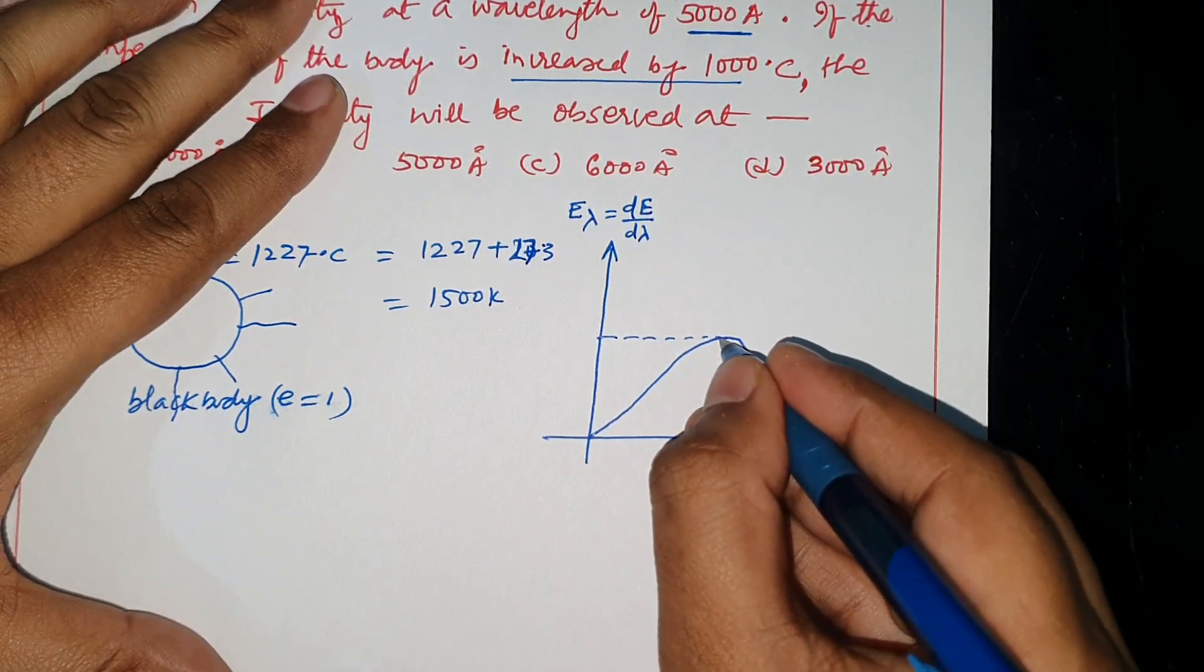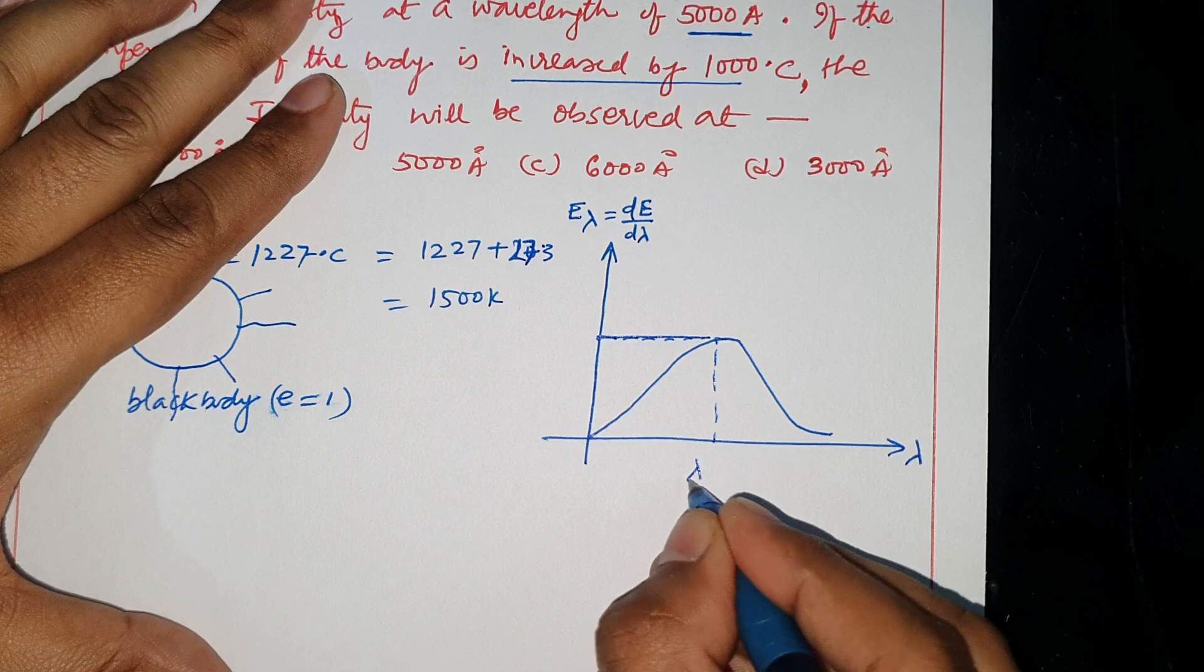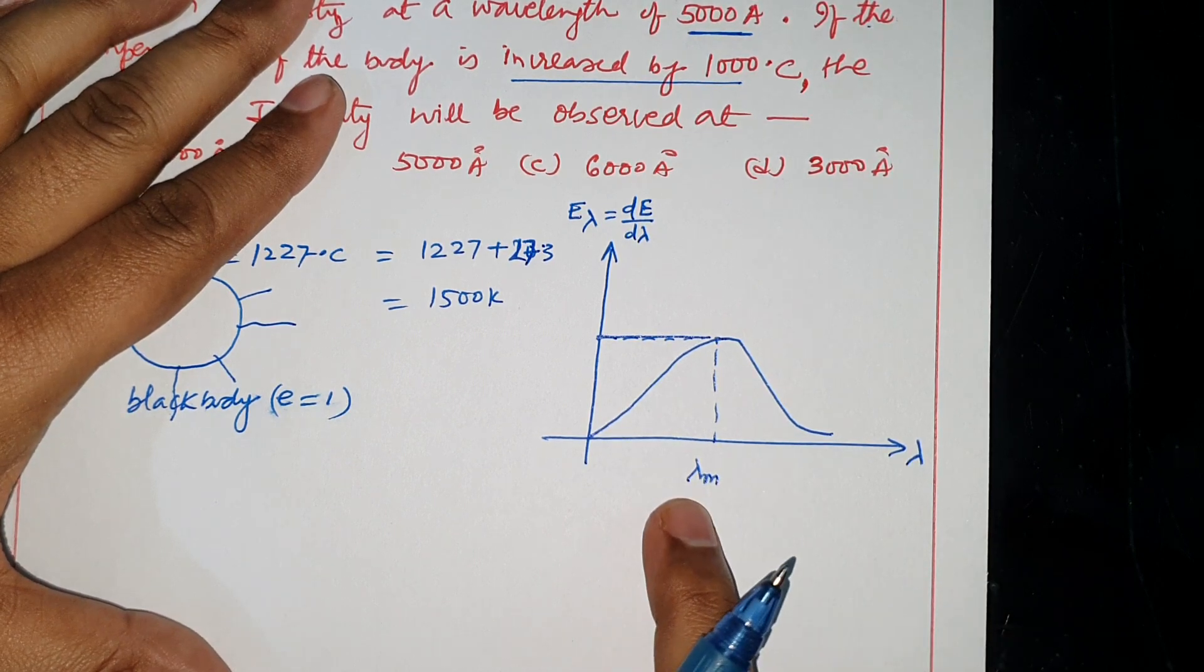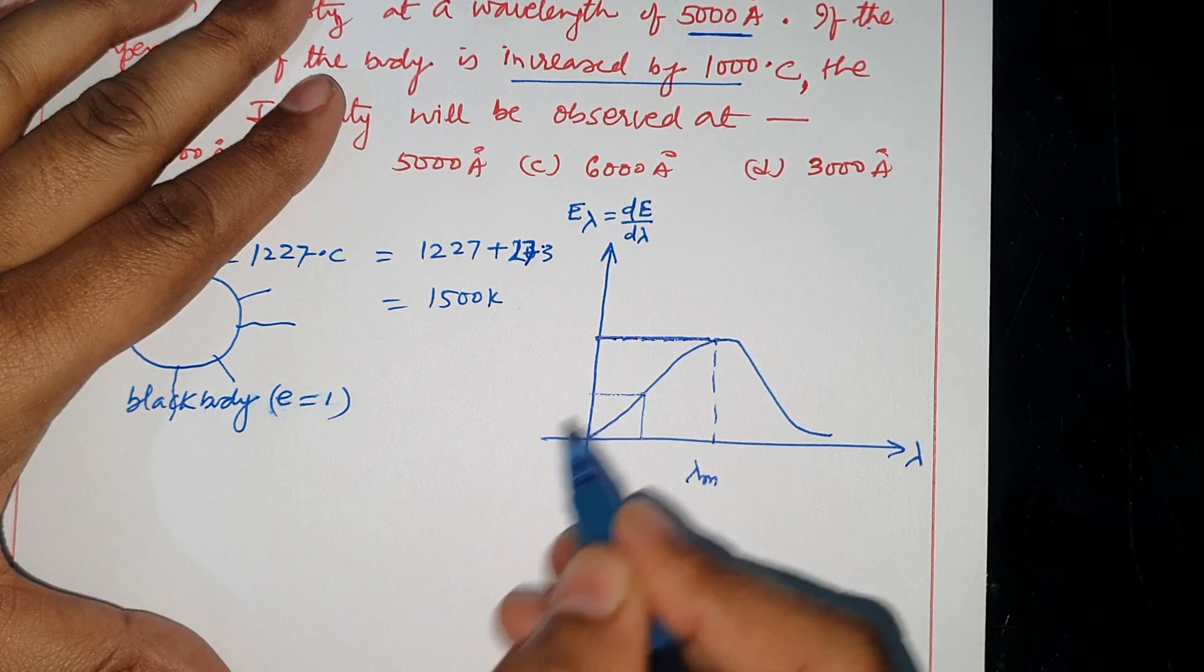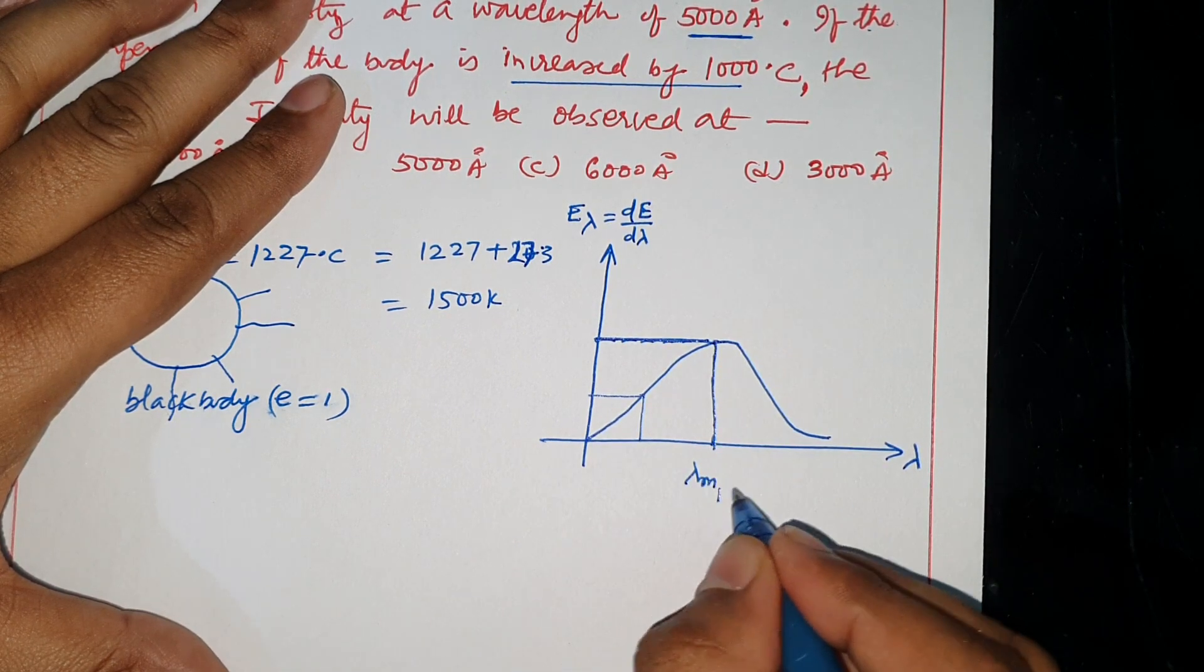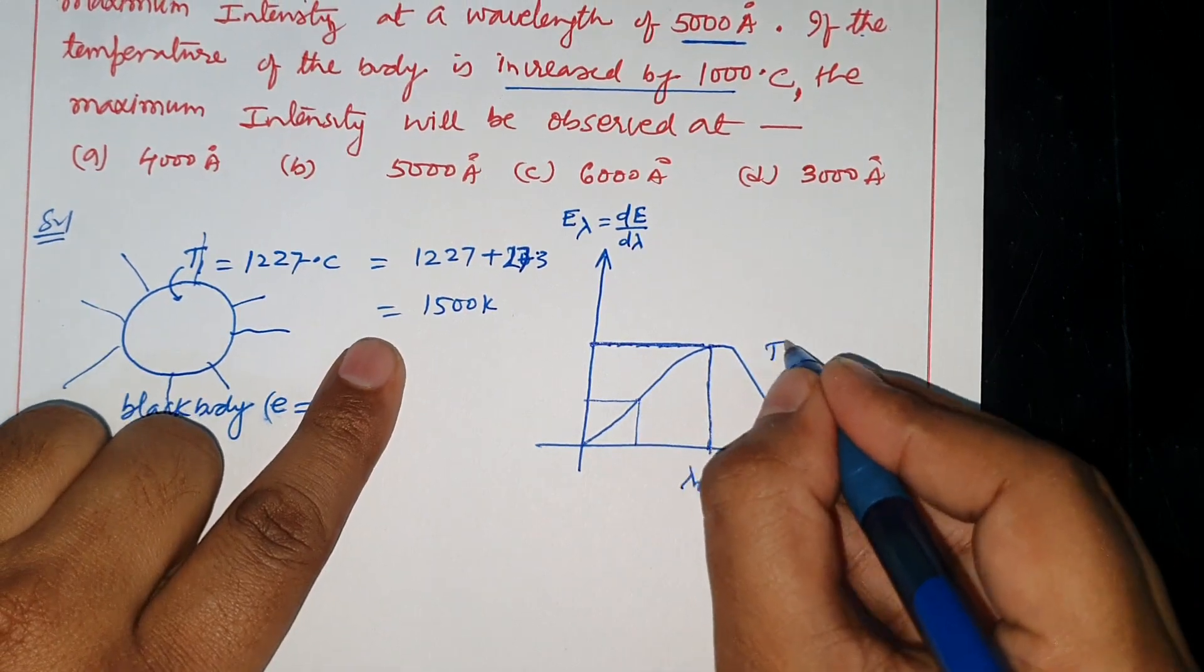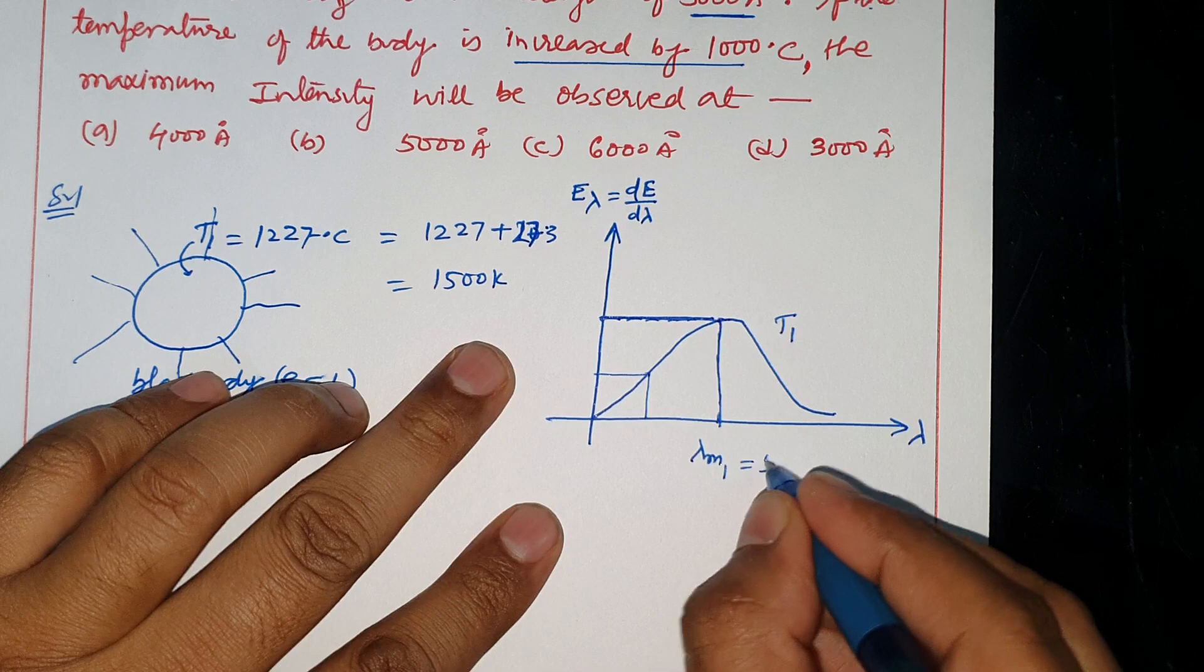At one particular wavelength, the intensity is maximum. We call this the maximum wavelength, lambda M1. For this temperature T1, lambda M1 is 5000 Angstrom.